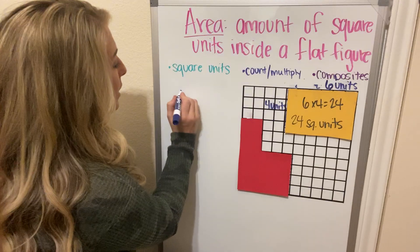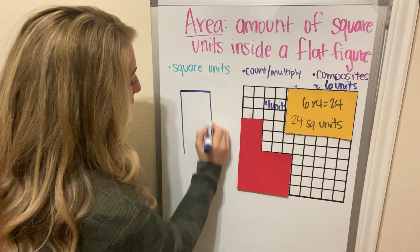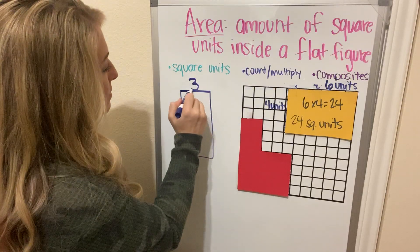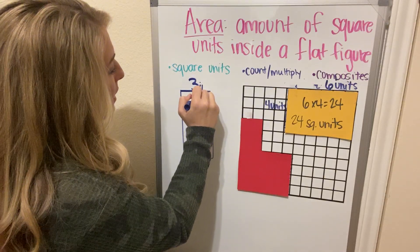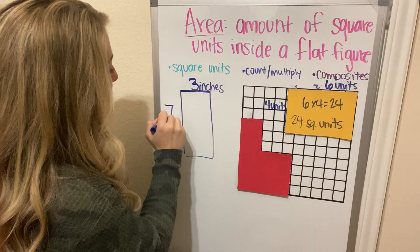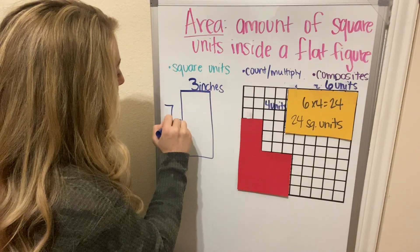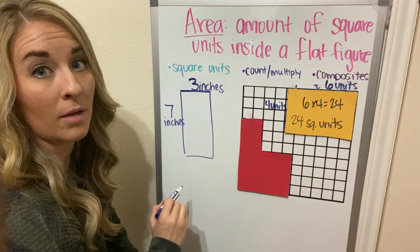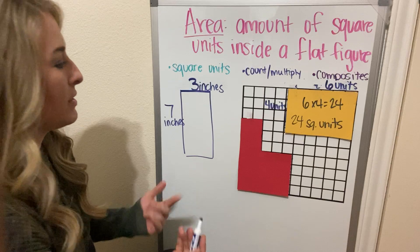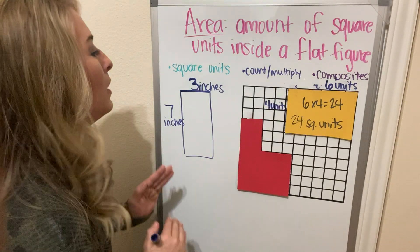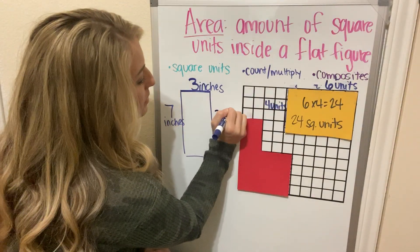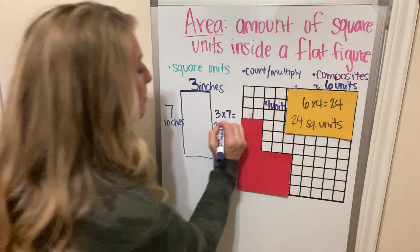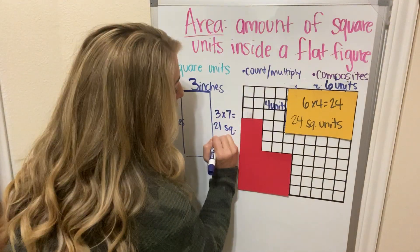Let's try the area of a figure without square units drawn in. Let's say this is 3 inches wide and 7 inches tall. That means I have 3 repeated 7 times. So 3 times 7 equals 21. But to show I'm finding the area, I must include square inches.